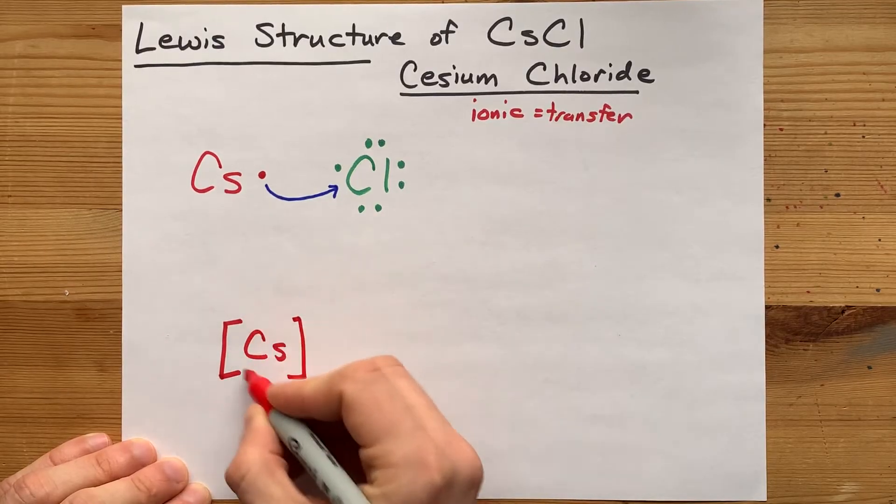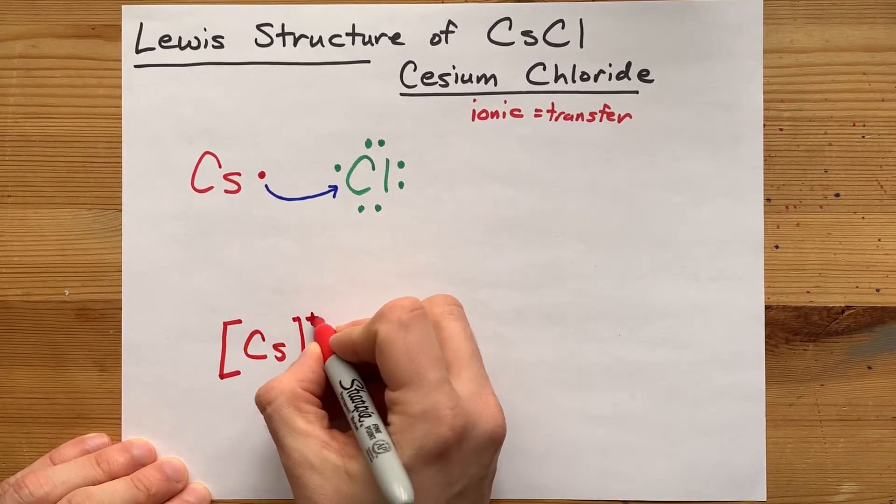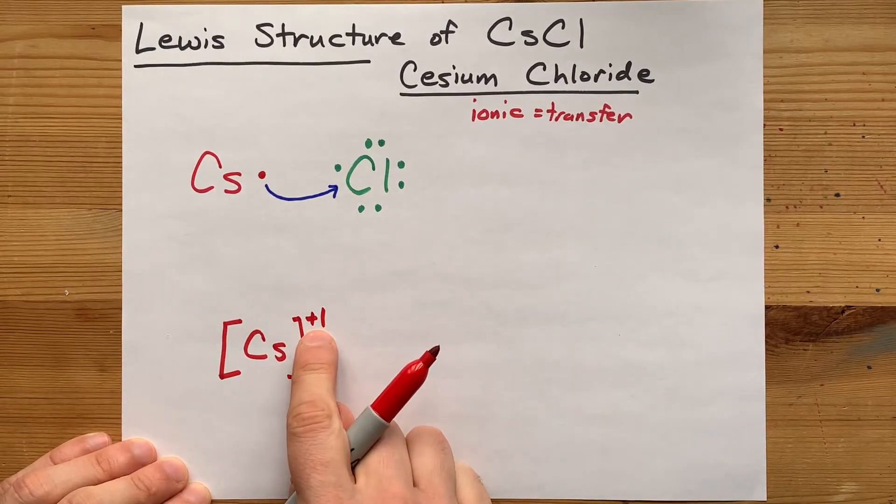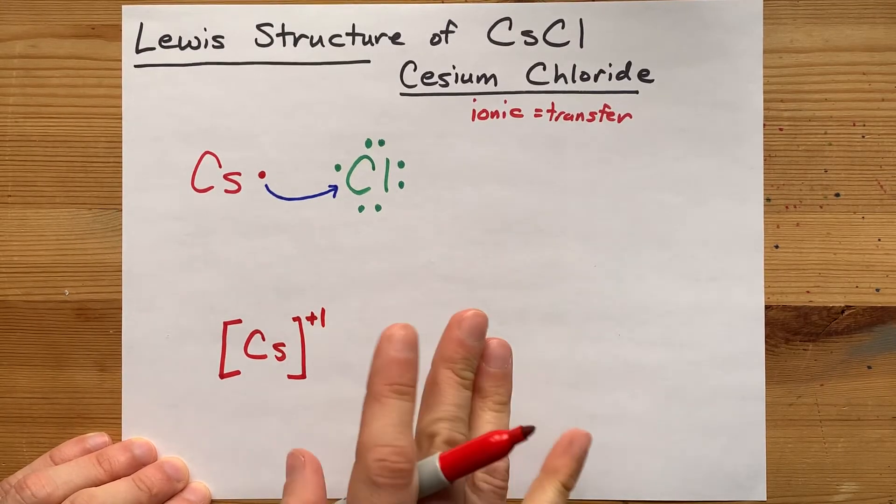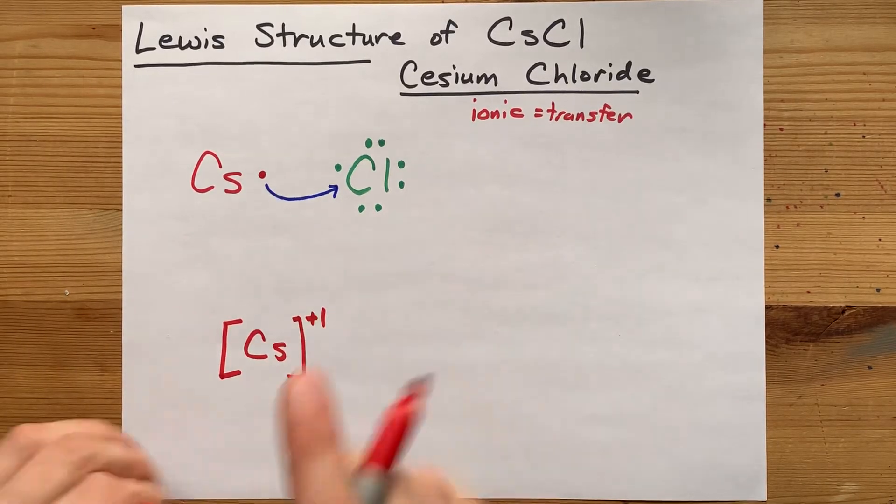So draw yourself a cesium with no electrons in that outer shell. Give it a plus one charge because it lost one negatively charged electron. I know it's weird, but you're losing a minus, which gives it a charge of plus one.